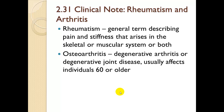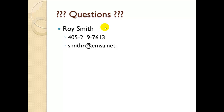Clinical note — rheumatism and arthritis: rheumatoid arthritis and osteoarthritis are different, though both involve inflammation of the joints. Rheumatism is a general term for pain and stiffness arising in the skeletal or muscular systems. Osteoarthritis is degenerative joint disease, usually affecting individuals 60 or older. Rheumatoid arthritis is an autoimmune disease in which the immune system attacks the body's own bones and joints. This is the end of part 1 of the skeletal system.